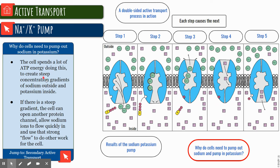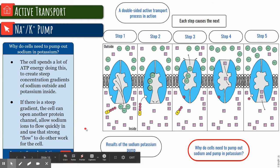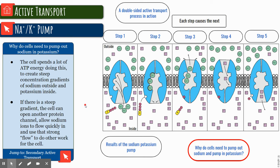The cell spends a lot of ATP energy doing this to create this huge concentration gradient inside and outside. If there's a steep enough gradient, the cell can open another protein channel that allows ions to flow in and out. We're going to see this a lot in nerve conduction.